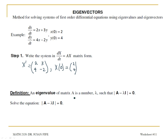An eigenvalue of a matrix A is the number lambda such that the determinant of A minus lambda I is equal to 0. This I is called the identity matrix. The identity matrix is a square matrix that has 1s across the diagonal and 0s everywhere else. For a 2 by 2 matrix, it looks like: 1, 0, 0, 1.